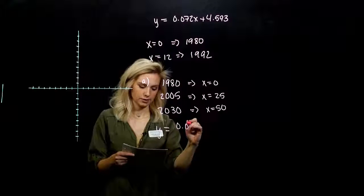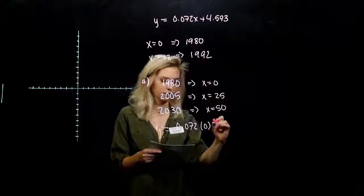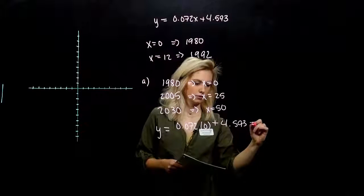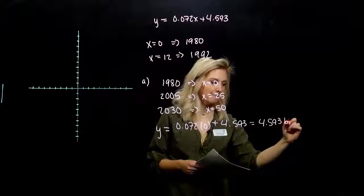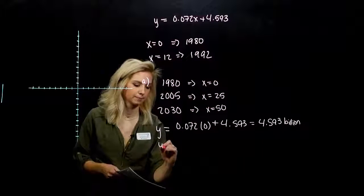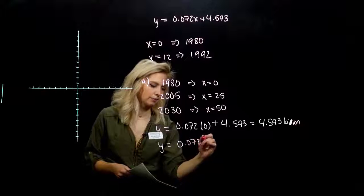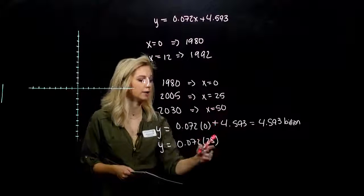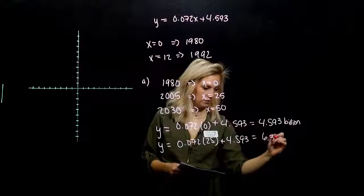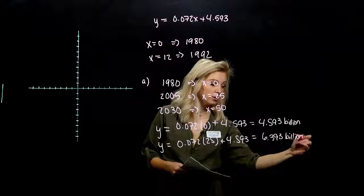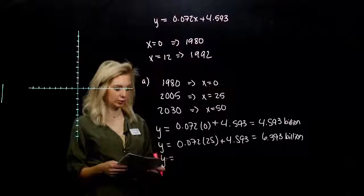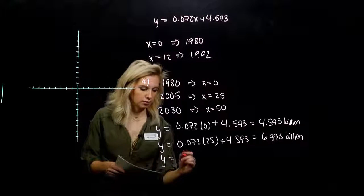First one, 0.72 times zero. That term's going to be gone. I'm just going to be left with the y-intercept, which is 4.593 billion, and that's in 1980. In 2005, what are we looking at? I'm plugging in 25 for x, adding on this constant. Don't worry about calculating it now, I'll just give it to you. We're increasing, which makes sense.